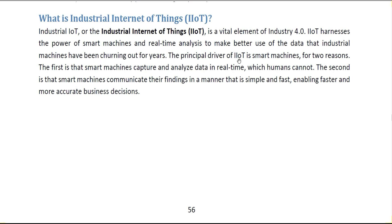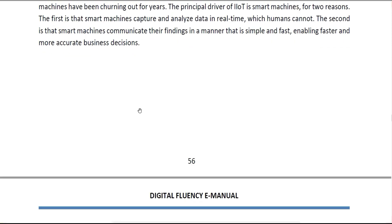The principal driver of IIoT is smart machines, for two reasons. First, smart machines capture and analyze data in real time, which humans cannot do alone. Second, smart machines communicate their findings in a manner that is simple and fast, enabling faster and more accurate business decisions.